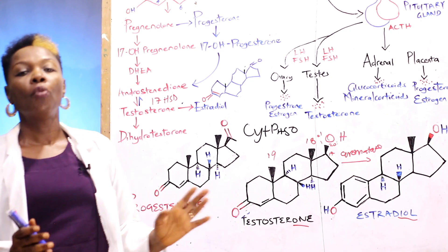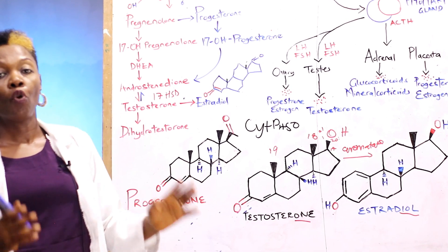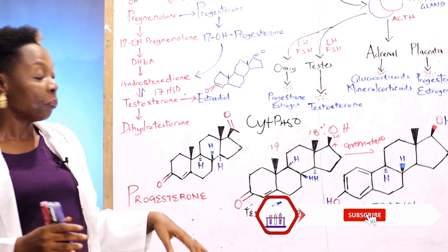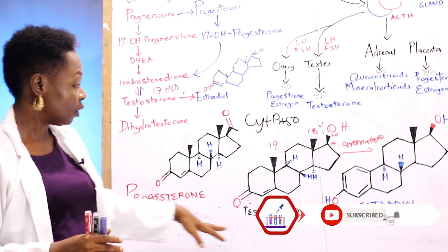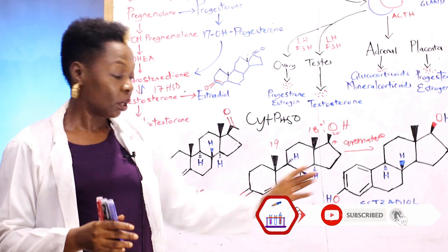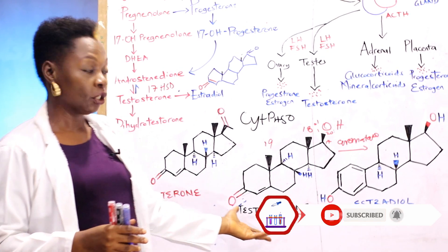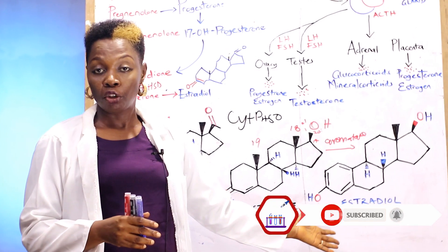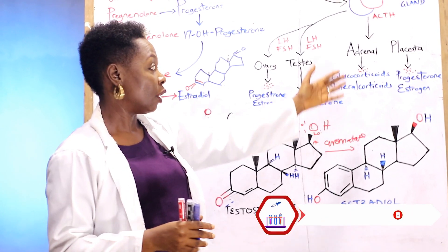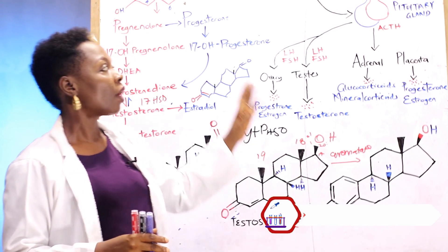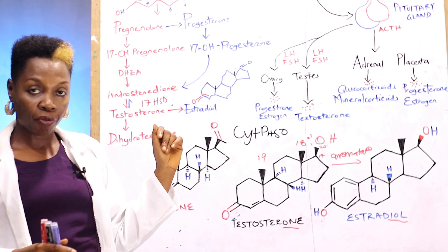Steroid hormones are a class of hormones that are lipid soluble. They all have this ring structure. You have progesterone, testosterone, estradiol, and the hormones of the adrenal gland.